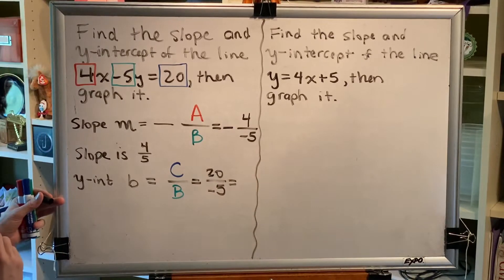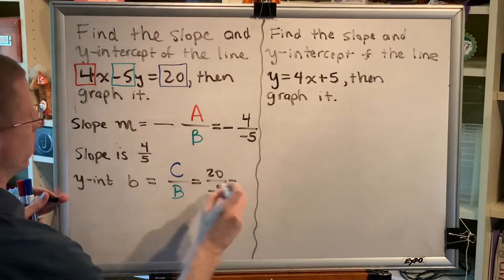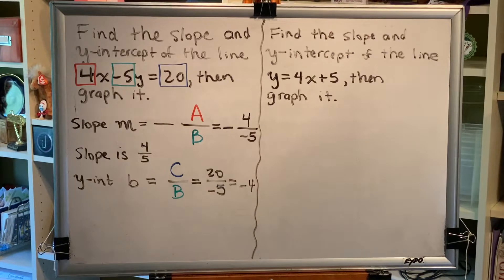There's one negative, therefore we get an odd number of negatives, therefore we get a negative as a result. So, the y-intercept is negative 4.